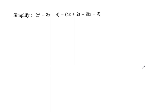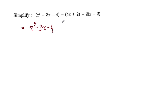Simplify: x² - 3x - 4 - (4x + 2)(-2). We open the bracket. Now x² - 3x - 4, and we distribute the minus sign in front of the bracket.